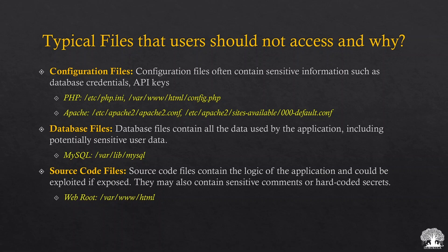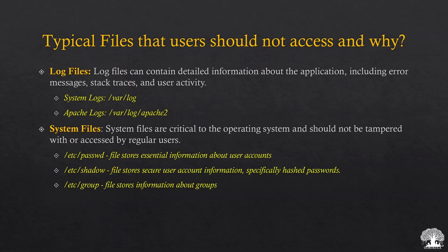Database files contain all data used by the application, including potentially sensitive user data. Source code files are very important to attackers because by reading the source code of a web application, we can understand how it behaves and create exploits based on it. Log files are also of interest — every event on the system is recorded there, and an attacker may want to erase those tracks after an attack.